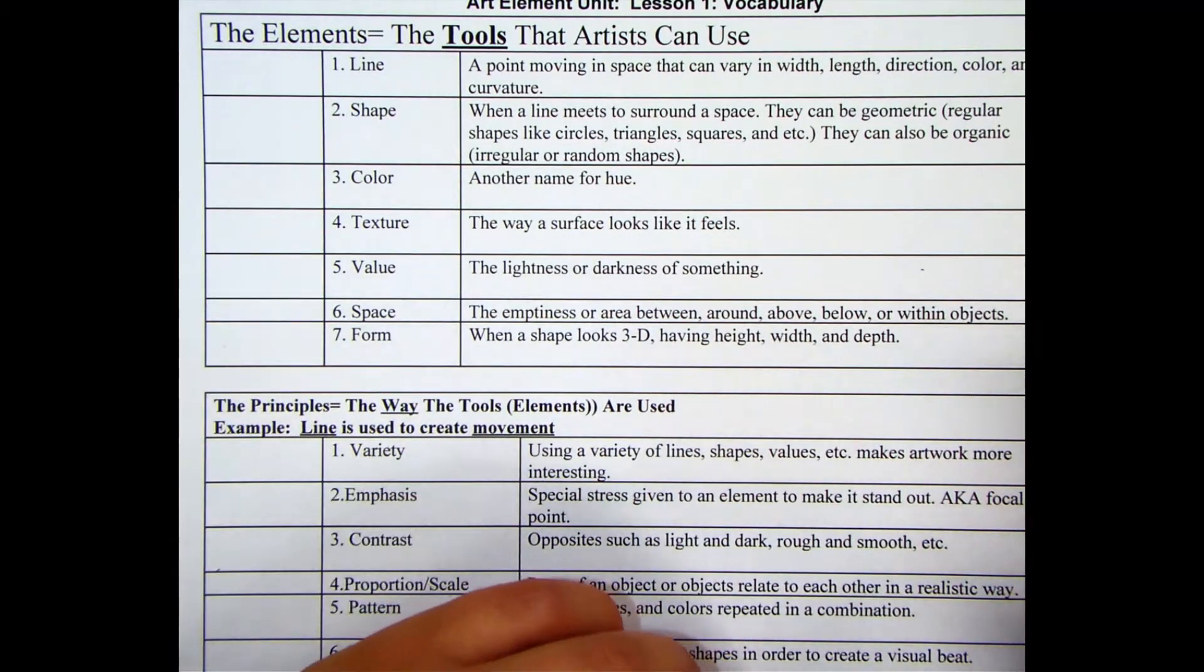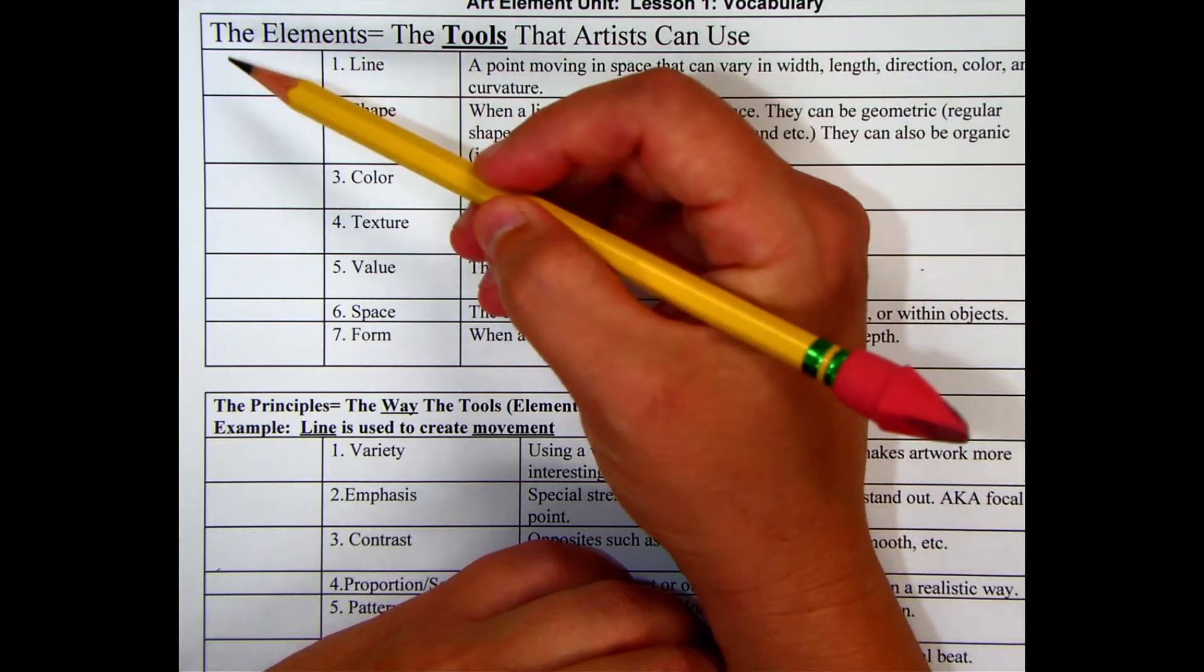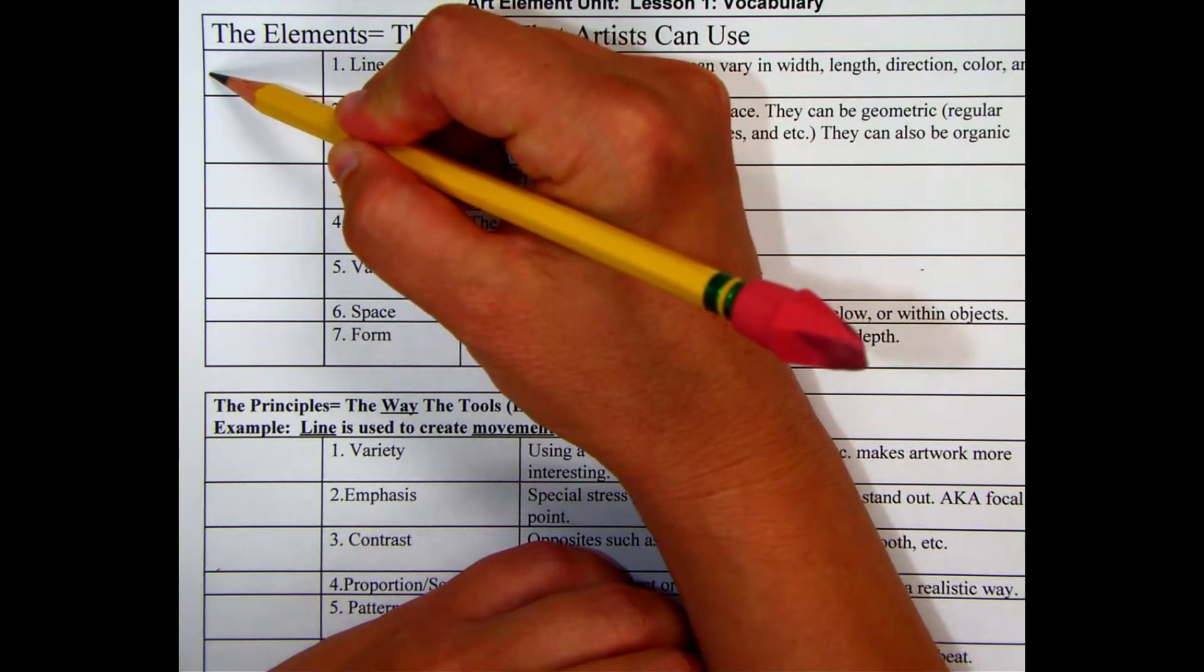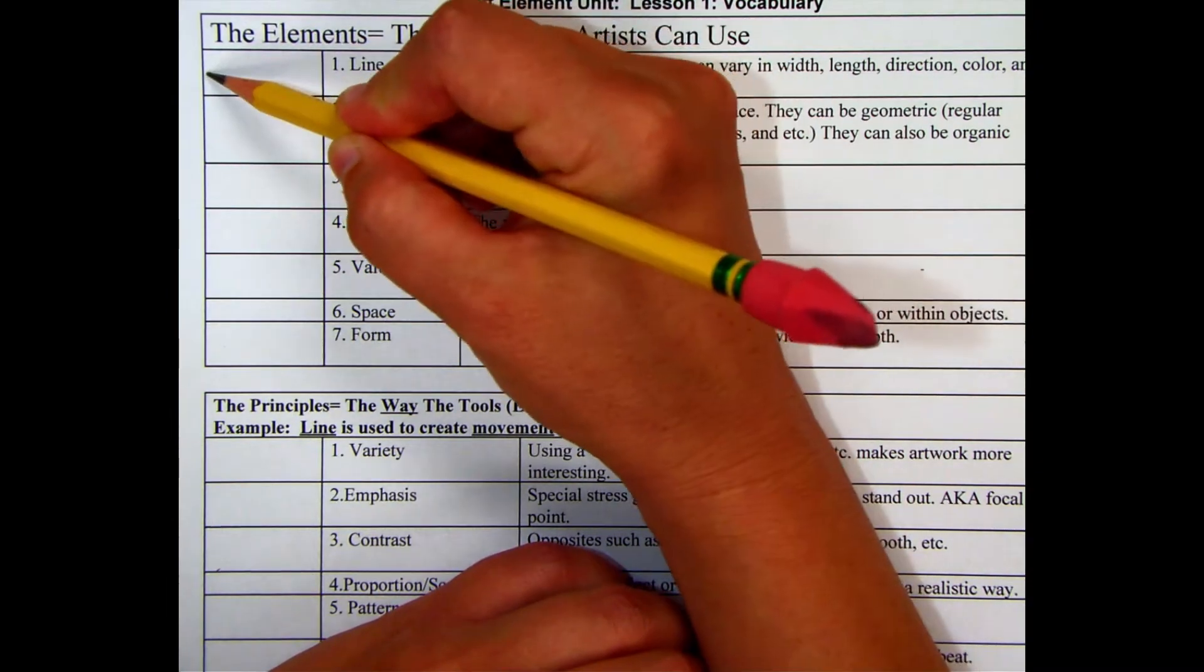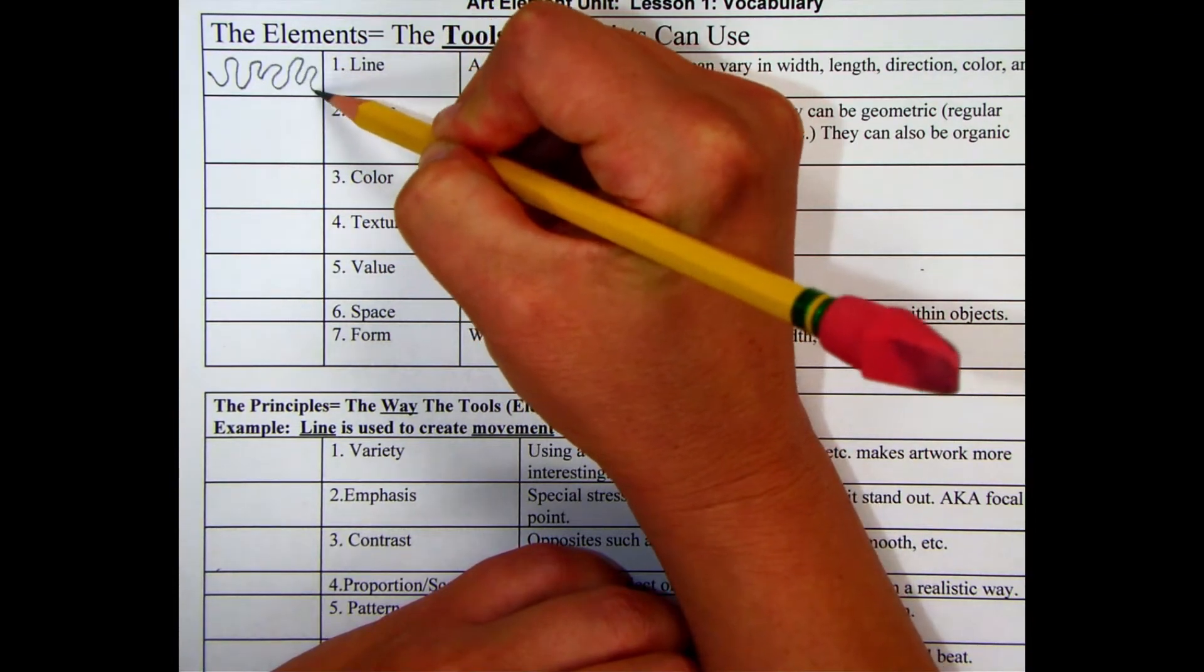Let's start with line. Line is basically just a point moving in space. It can vary in width, length, direction, color, curvature. When you put the pencil on the page, it has to move in order to create that line, so point moving in space.